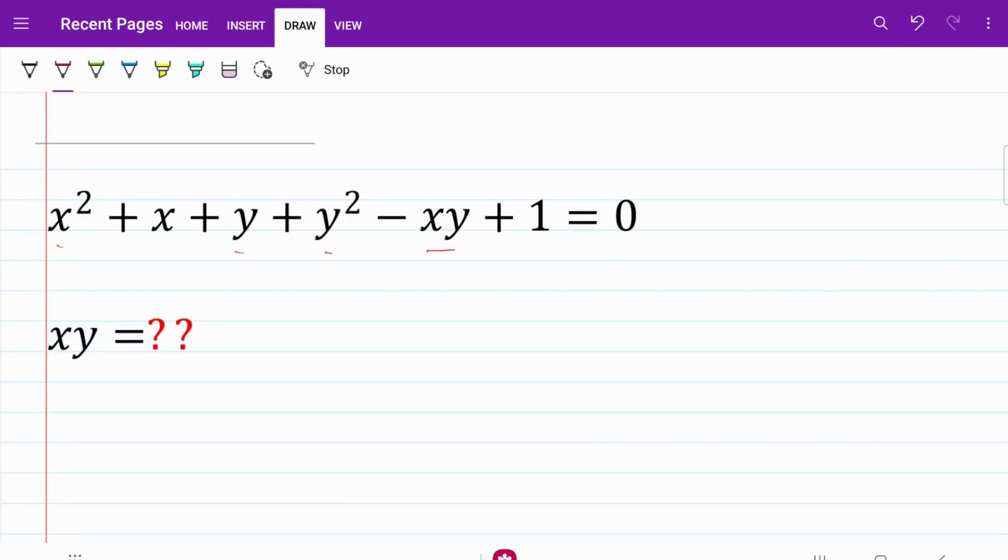Just by looking at the equation, the first instinct to solve for the value of xy would be to move it to the right-hand side and deal with the remaining components. But if we do that, the components that are on the left don't give a whole lot of clues as to how they can be factorized. So let's try a different way. We are just going to leave xy on the left-hand side of the equation the way it is.